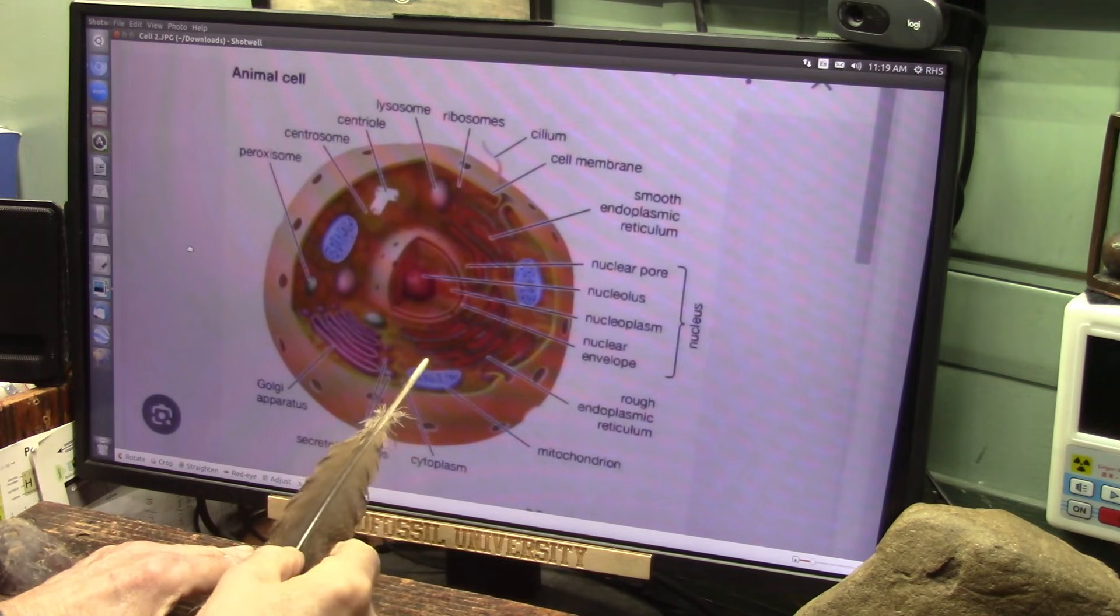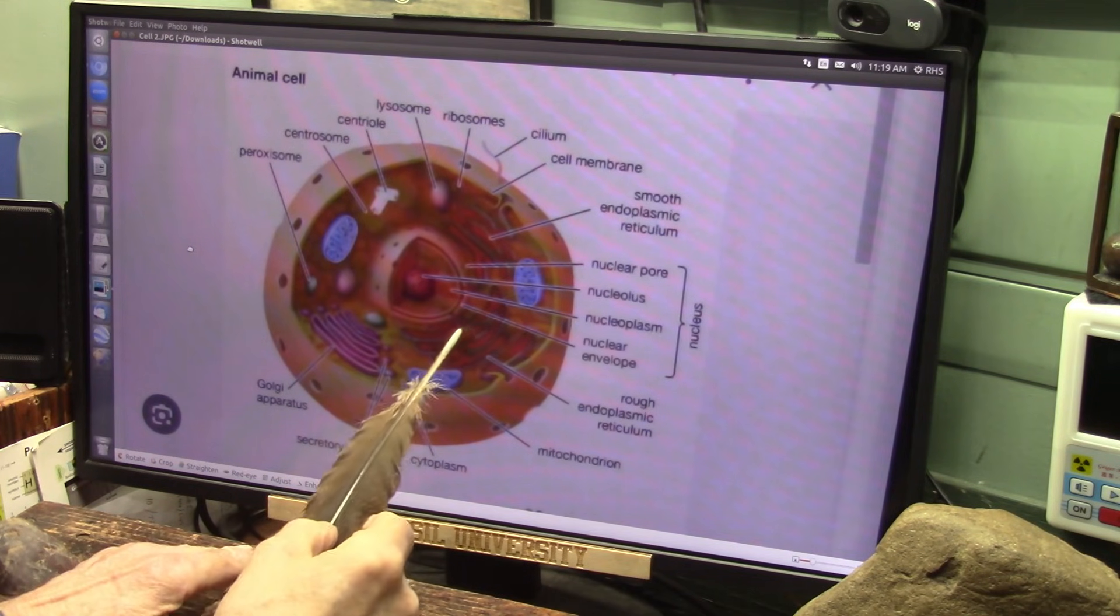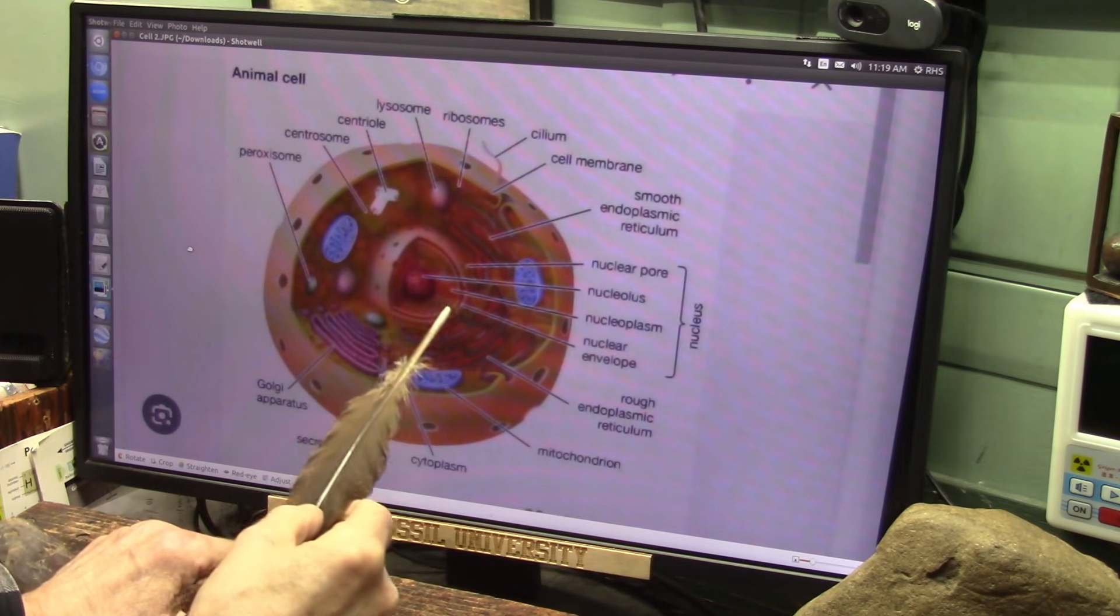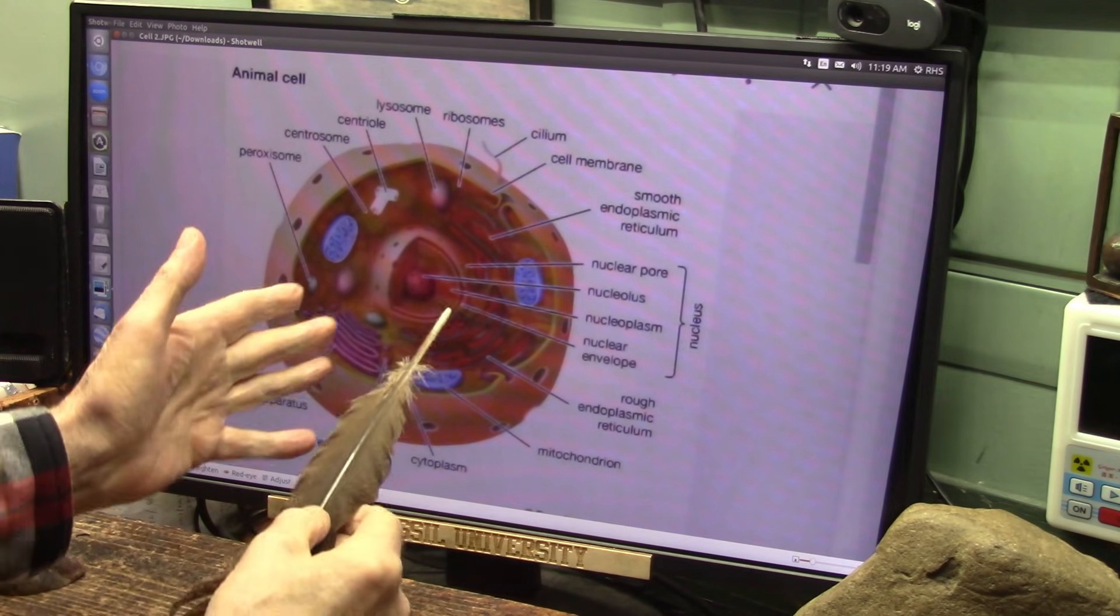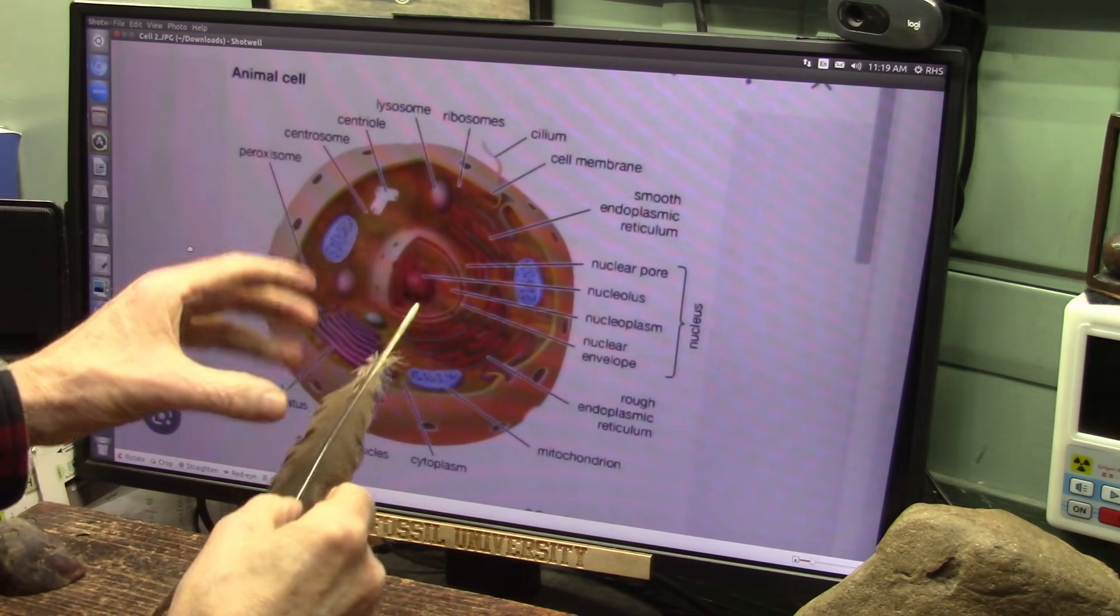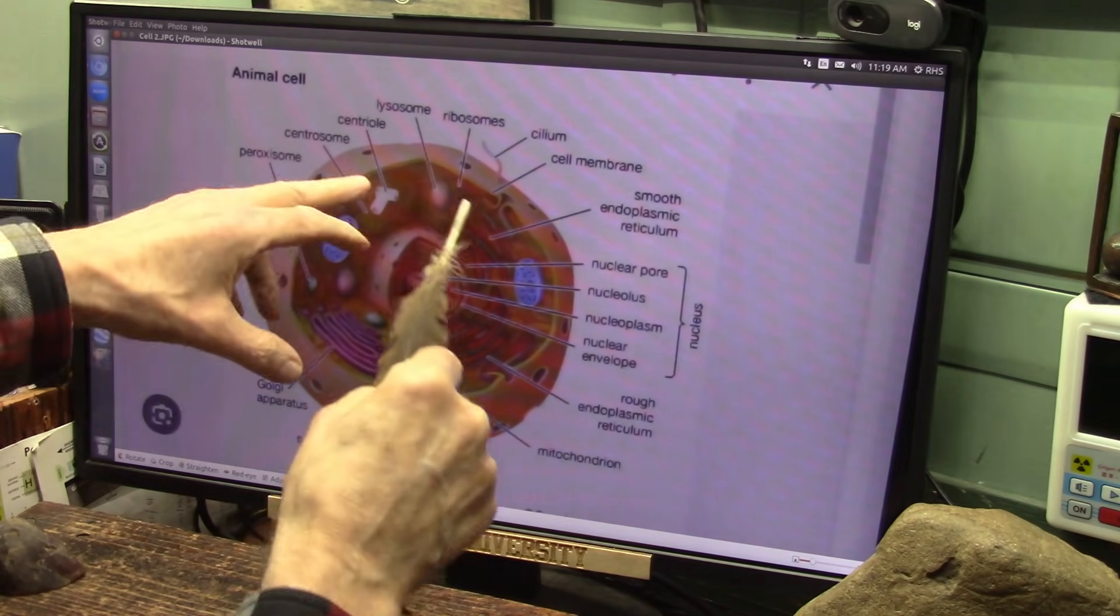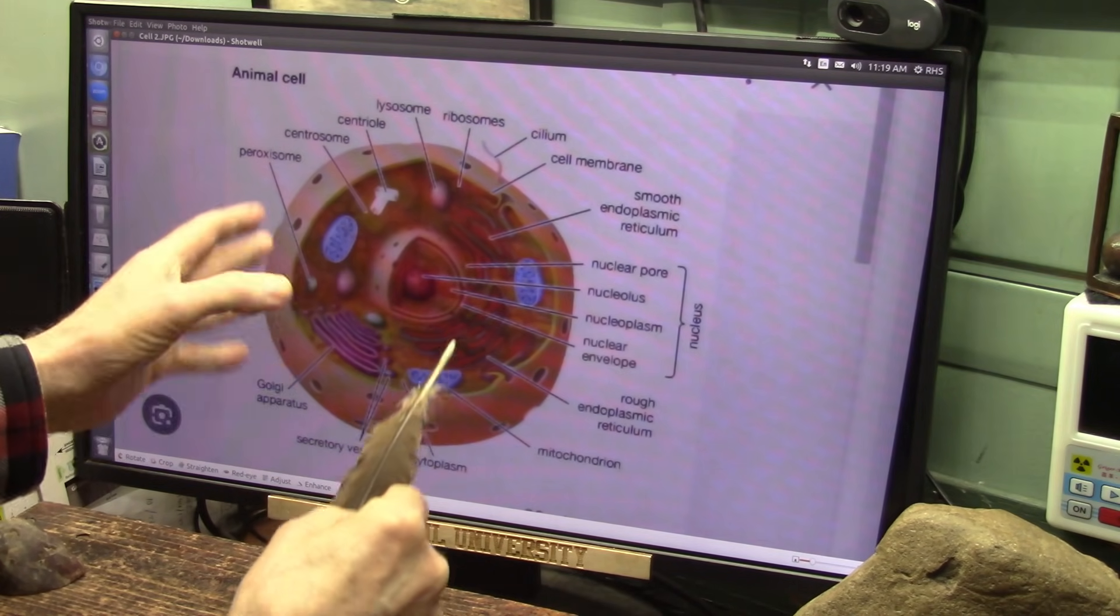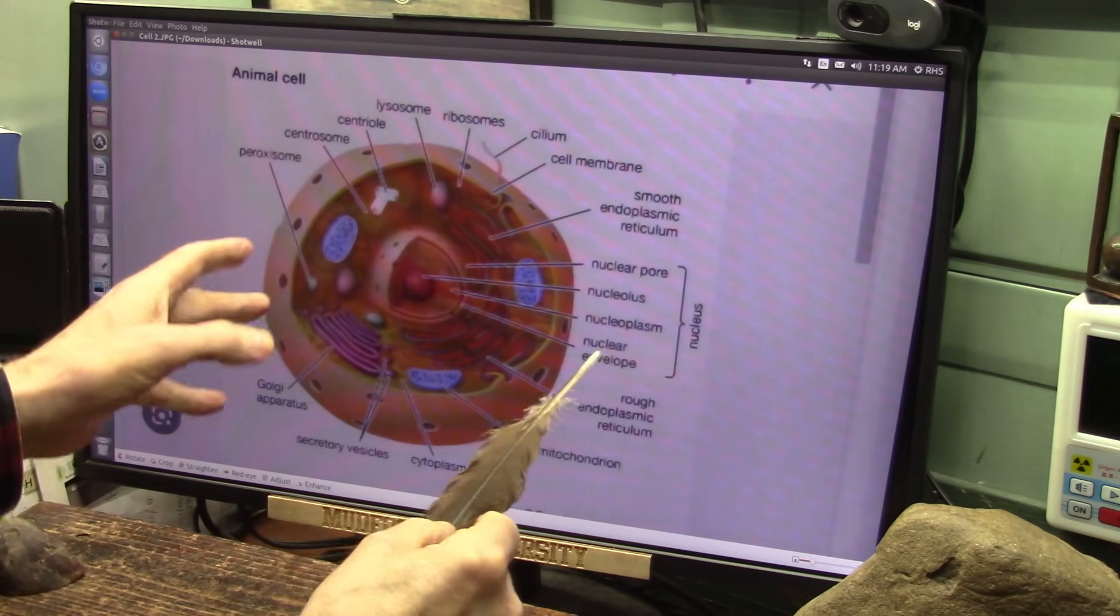Primarily, they collect on this rough endoplasmic reticulum, which is here, which is the gateway to the DNA. Basically, this is where your DNA in a nucleolus is stored. So inside of here, you have millions of these little ribosomes.